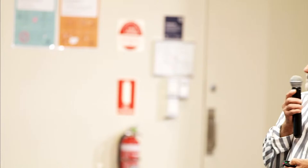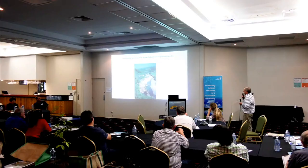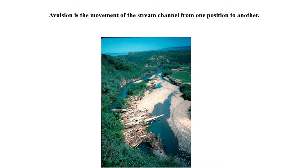Channel avulsion is when the stream channel itself moves from one position to another — a heap of logs and stuff jammed in there and the creek moves out and goes around. We've got major problems with that on the flats, like in Warrow Creek out near Arachula. Tent Hill Creek at Gatton during the 2011–2013 floods had major problems with that sort of stuff.